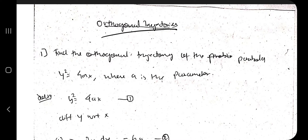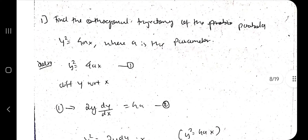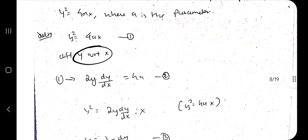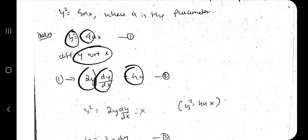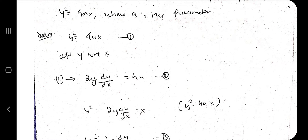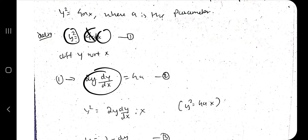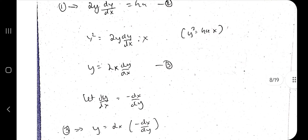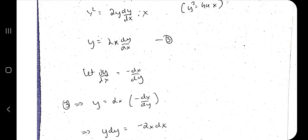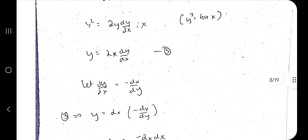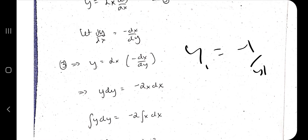Moving on to orthogonal trajectories. You are given a parabolic equation like y² = 4ax where a is a parameter. Differentiate with respect to x to get 2y·dy/dx = 4a. Substitute 4a = y²/x back in to eliminate the parameter, giving y² = 2y·(dy/dx)·x. To find the orthogonal trajectory, replace dy/dx with −dx/dy everywhere, then simplify to get the final answer.